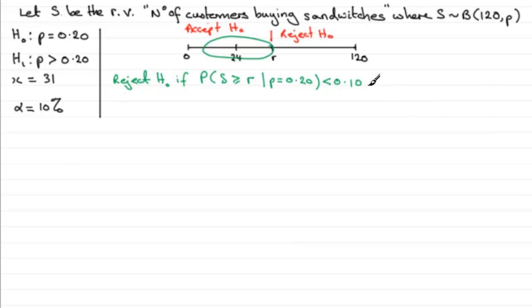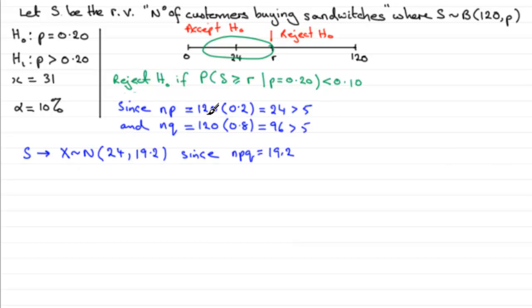Now I did say use a suitable approximation to do this test. In the previous video I showed you it was the normal distribution because certain criteria were met - NP and NQ turned out to be greater than 5. So S could be approximated to a normal distribution. I defined this random variable X that followed this normal distribution, had a mean of 24 and variance of 19.2 because NPQ gave us that variance.